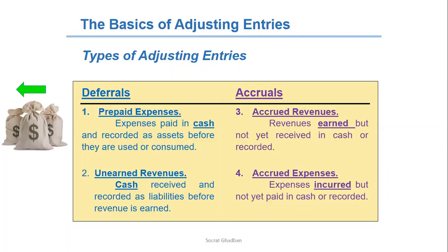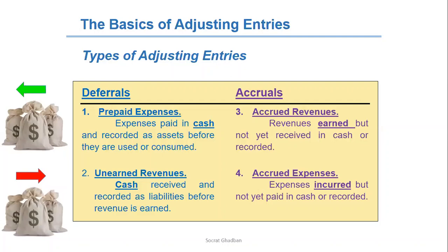If I leave after one month, they have to pay me back my cash. The second group is unearned revenues — cash received and recorded as liabilities before revenue is earned. It means before providing the service or product, they pay me cash, so cash is increasing and therefore cash is debited. In return, since I'm not yet providing the product or service, it becomes a liability. If I don't provide the service or product, I have to pay back the cash.